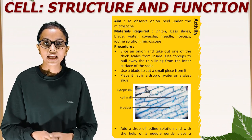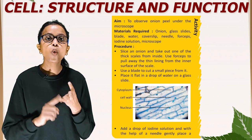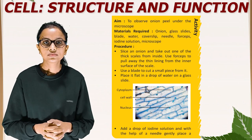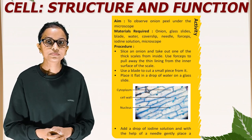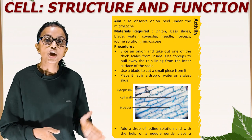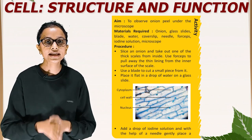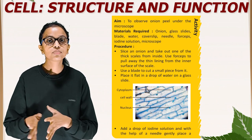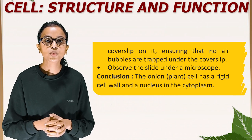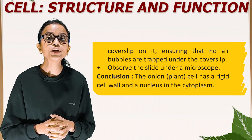Activity: Aim — to observe onion peel under the microscope. Materials required: onion, glass slide, blade, water, cover slip, needle, forceps, iodine solution, and microscope. Procedure: Slice an onion and take out one of the thick scales from inside. Use forceps to pull away the thin lining from the inner surface of the scale. Use a blade to cut a small piece from it. Place it flat on a drop of water on a glass slide. Add a drop of iodine solution and, with the help of a needle, gently place a cover slip on it, ensuring that no air bubbles are trapped under the cover slip. Observe the slide under a microscope. Conclusion: The onion plant cell has a rigid cell wall and a nucleus in the cytoplasm.